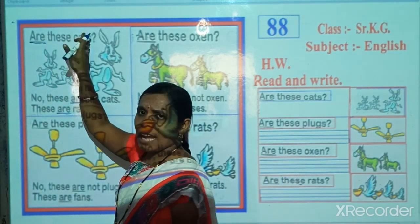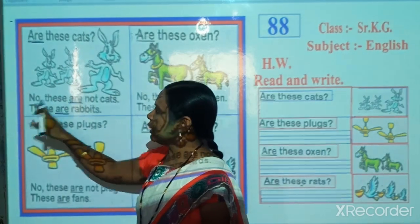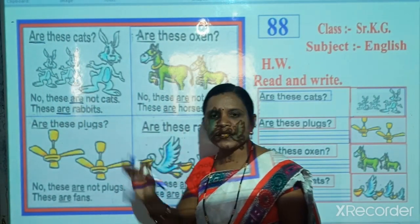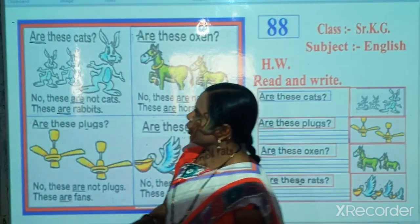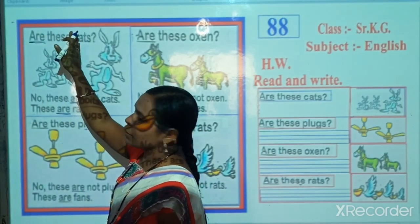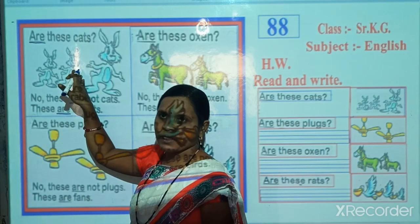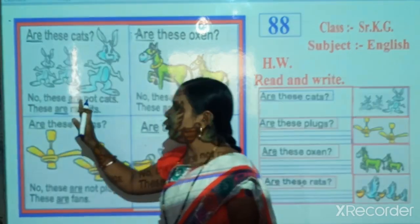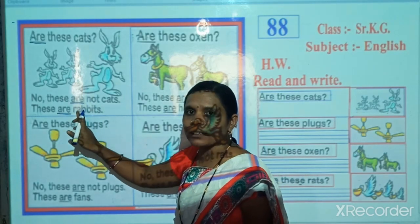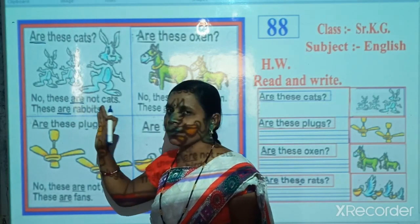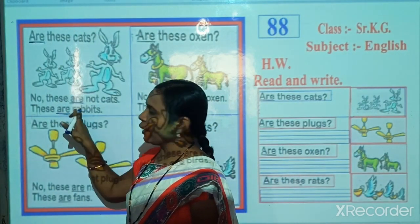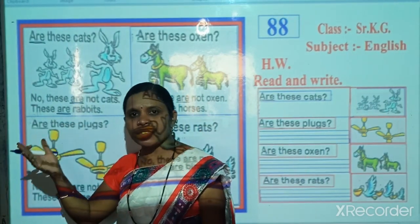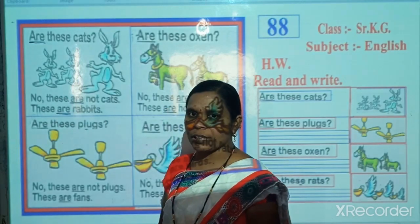Are these cats? No, these are not cats. These are rabbits. Kids, look carefully — when we are not sure about this object, that time we use 'Are'. And when we reply about this object, that time also we use 'Are'. Both times we use 'Are' because here are more than one object, or many objects.